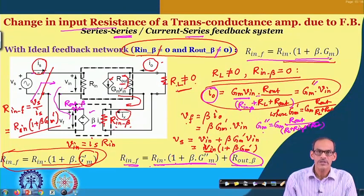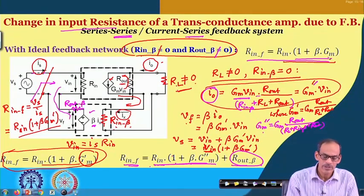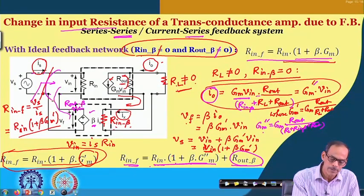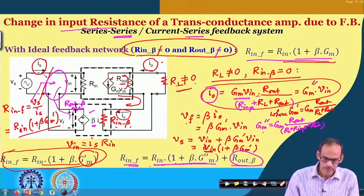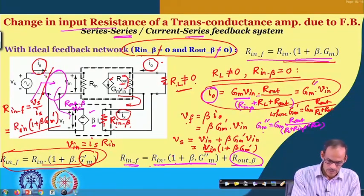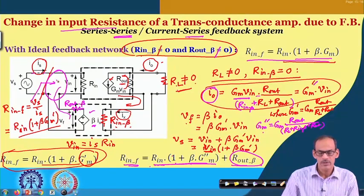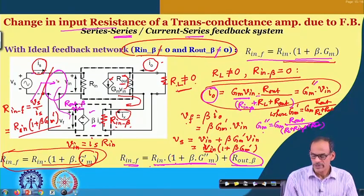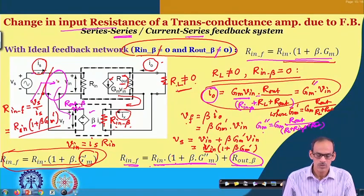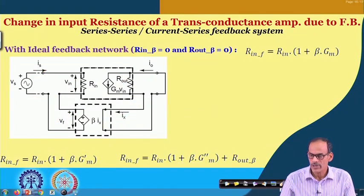Now let us consider the other situation where the mixer has a parallel (shunt) connection, meaning the input signal is in the form of current. We will now look at the change of input resistance of a current amplifier with feedback.